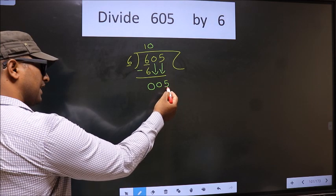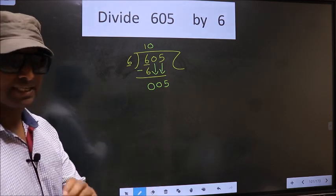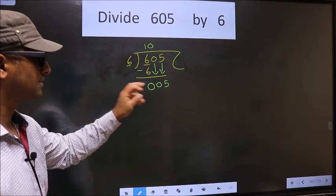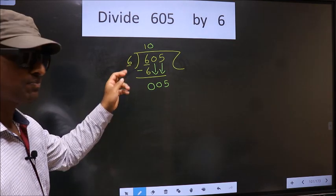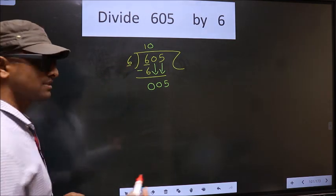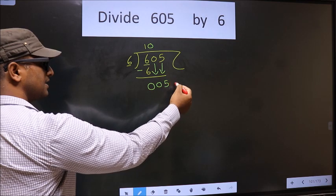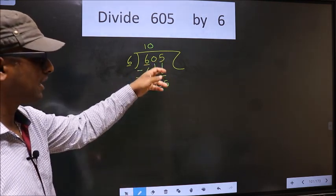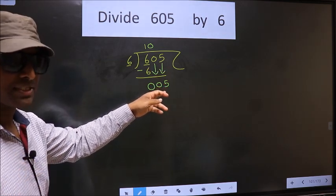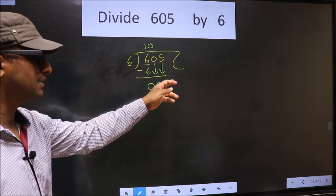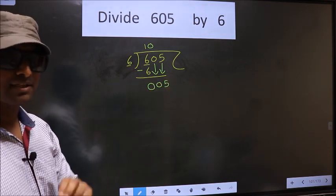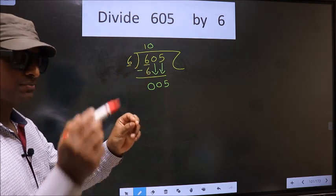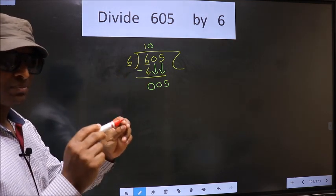Next, this is where the mistake happens. Here we have 5, here 6. 5 is smaller than 6, so what many do is they put a dot and take 0 here, which is wrong. You just brought the number down and in the same step you want to put a dot and take 0, which is wrong. Bringing the number down and putting a dot and taking 0 both at the same step you are not supposed to do.